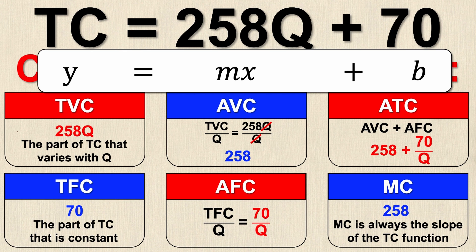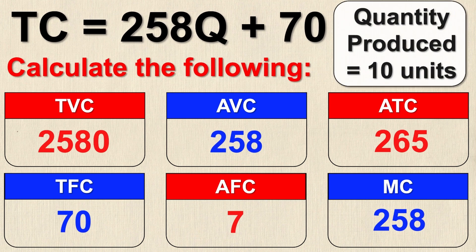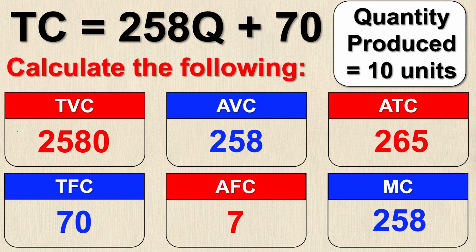Now let's suppose we're given an actual Q value. If the quantity produced equals 10, all I need to do is take that value of 10 and substitute it into all the equations where Q still appears to get the final values. Go back one minute in the video, pause, substitute Q = 10 into all equations, and you should get all six answers. If you don't, you may have made an algebraic mistake — let me know in the comments if you got them right, and I hope this video helped.